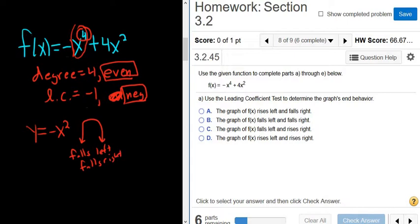So again, you first start by finding the degree, it's even. You find the leading coefficient, it's negative. Then using memory and knowledge, you say okay, what's the simplest function that has even degree and the negative leading coefficient? Well, y equals negative x squared. And that one looks like this. So it falls left and falls right.